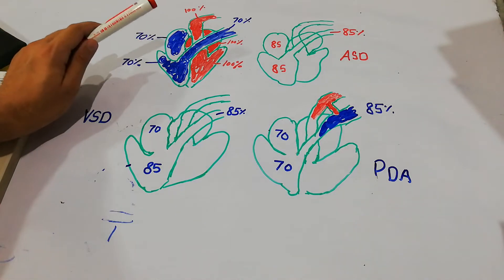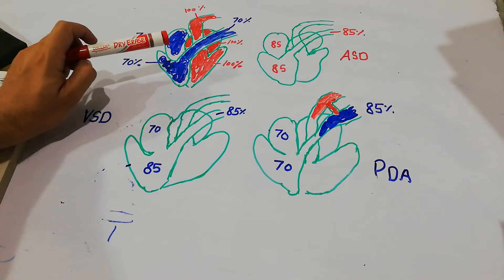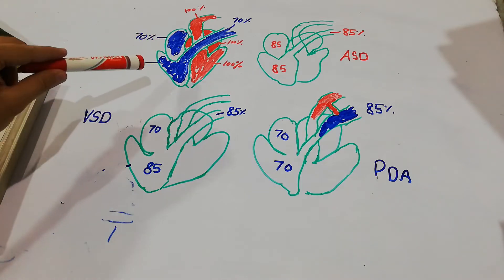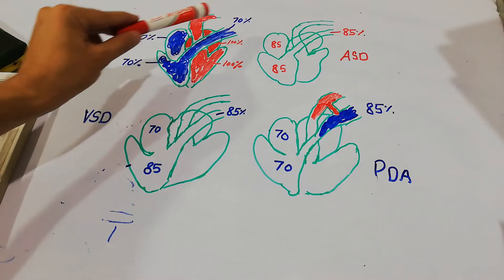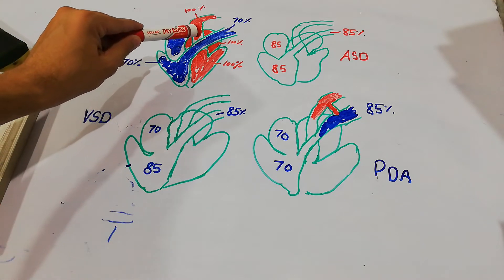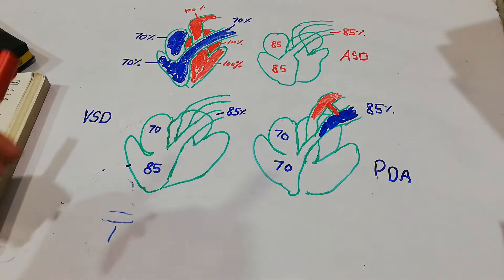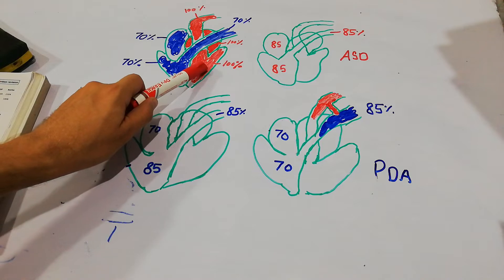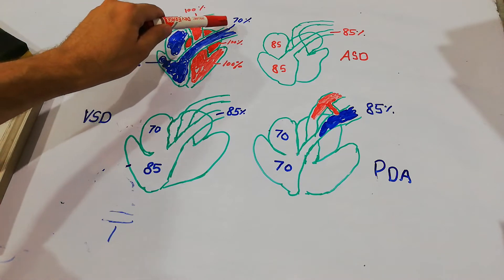In the normal heart, the oxygen saturation level in the right atrium is 70 percent. Similarly, the oxygen saturation level of blood in the right ventricle is also 70 percent, and in the pulmonary artery — the artery taking blood to the lungs — it is also 70 percent. This is deoxygenated blood. The oxygen saturation of blood in the left atrium is 100 percent, similarly in the left ventricle it is 100 percent, and in the aorta it is also 100 percent.